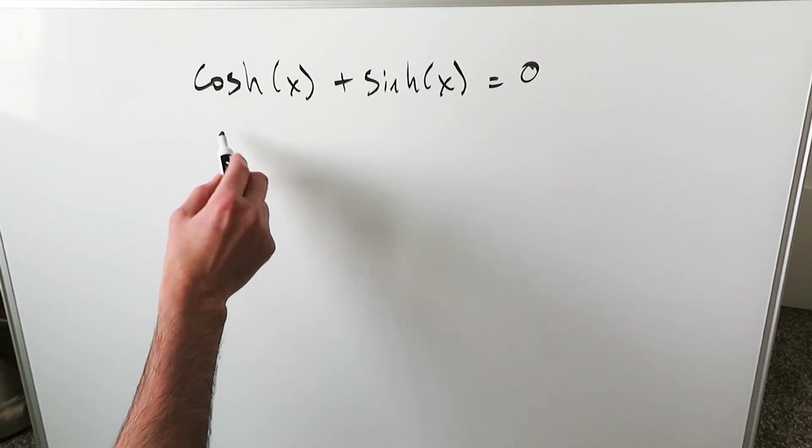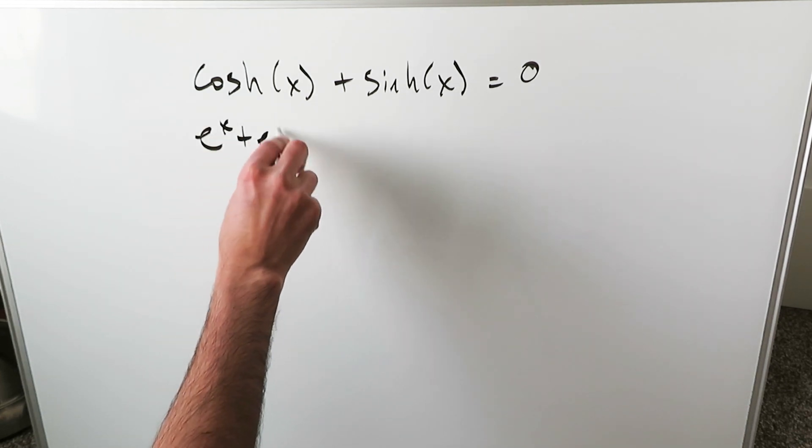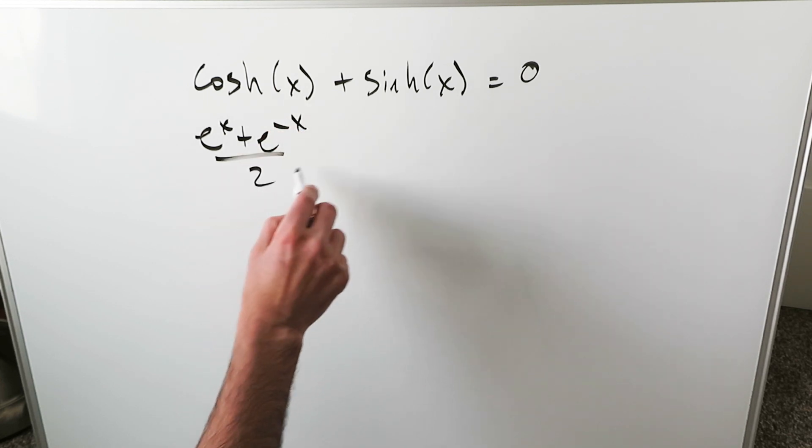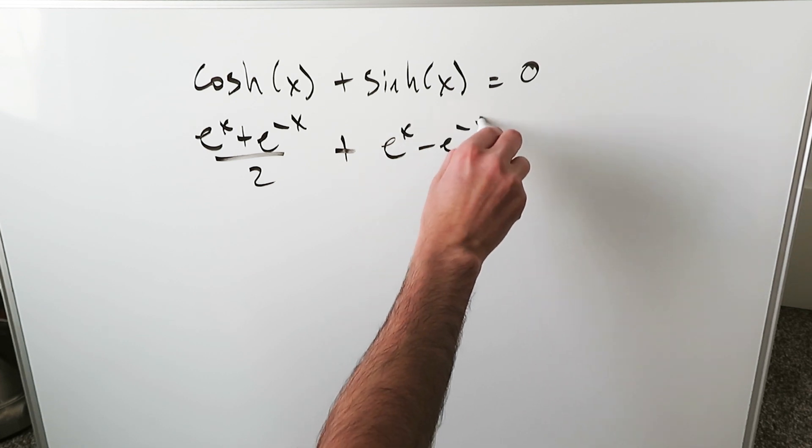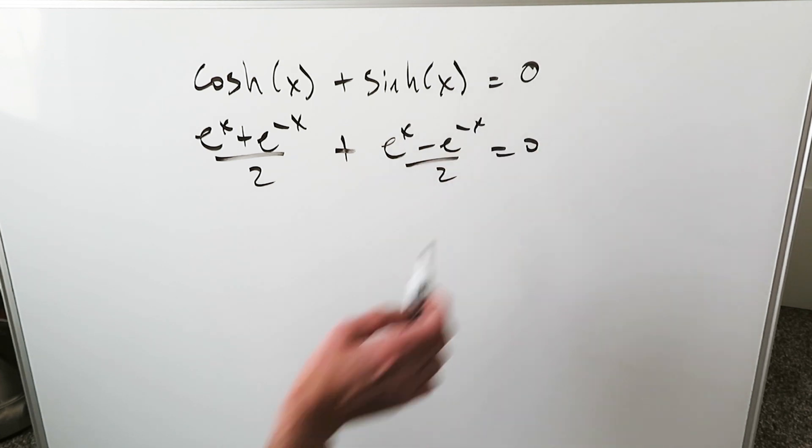Bring the definition of hyperbolic cosine: e to the x plus e to the minus x over 2, plus the definition of hyperbolic sine: e to the x minus e to the minus x over 2, equals 0.